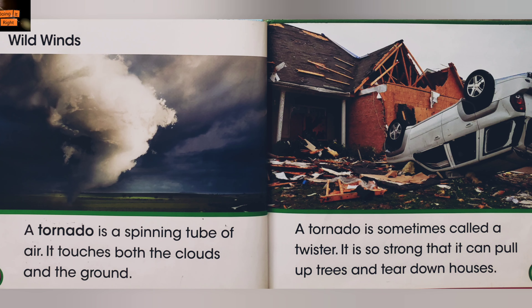Wild winds. A tornado is a spinning tube of air. It touches both the clouds and the ground. A tornado is sometimes called a twister. It is so strong that it can pull up trees and tear down houses.